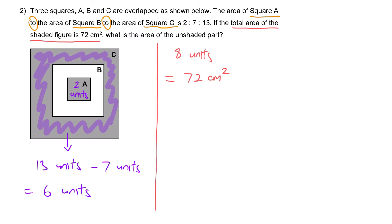These 8 units must be equal to 72 cm², because the total area of the shaded figure is 72 cm². From here, we can figure out 1 unit, which is 72 cm² divided by 8, to give us 9 cm².